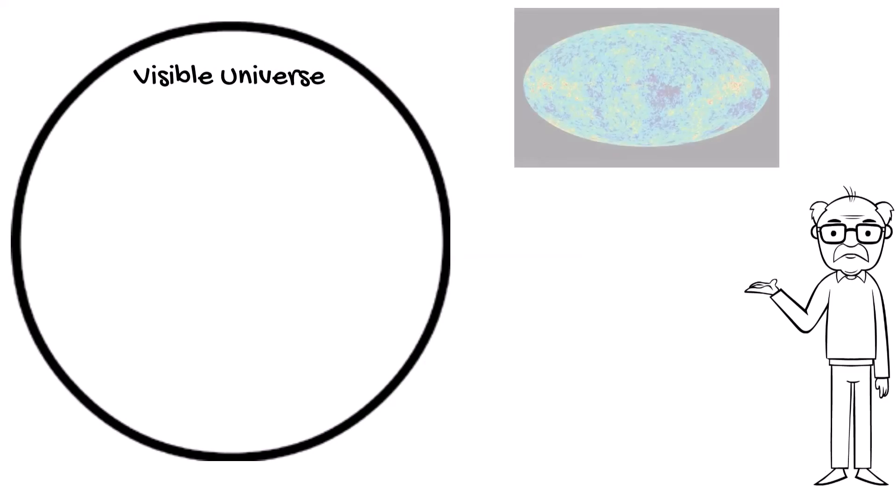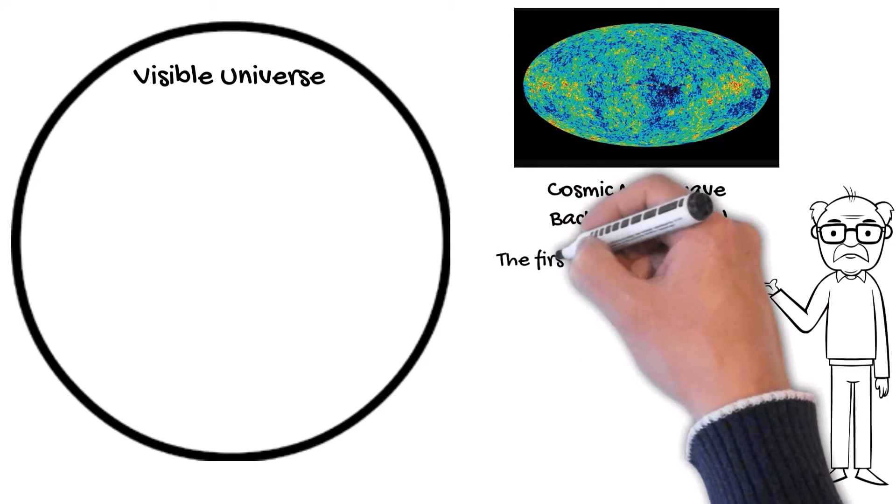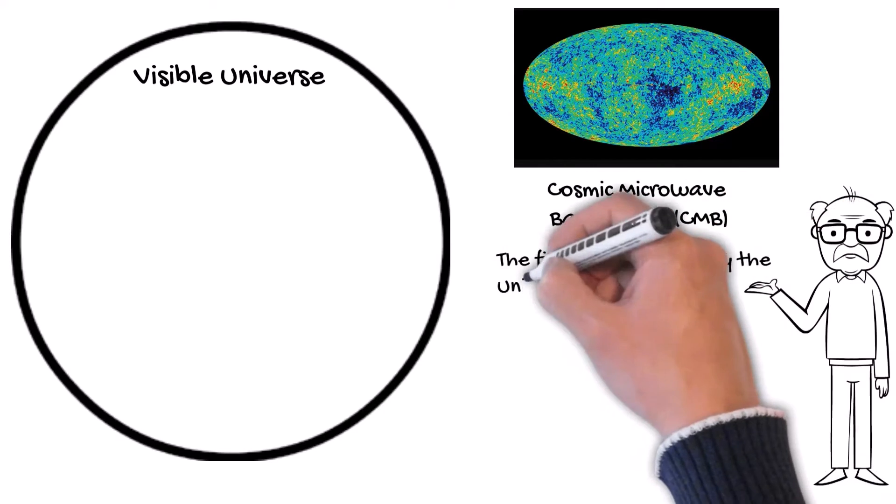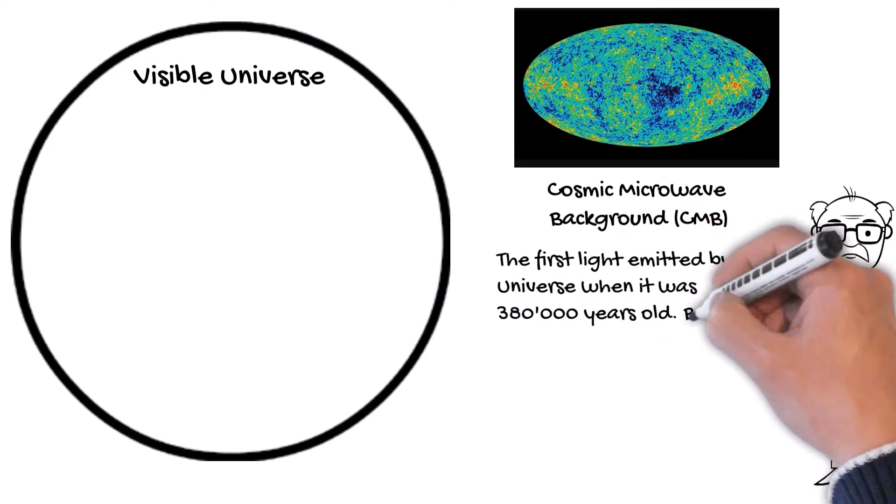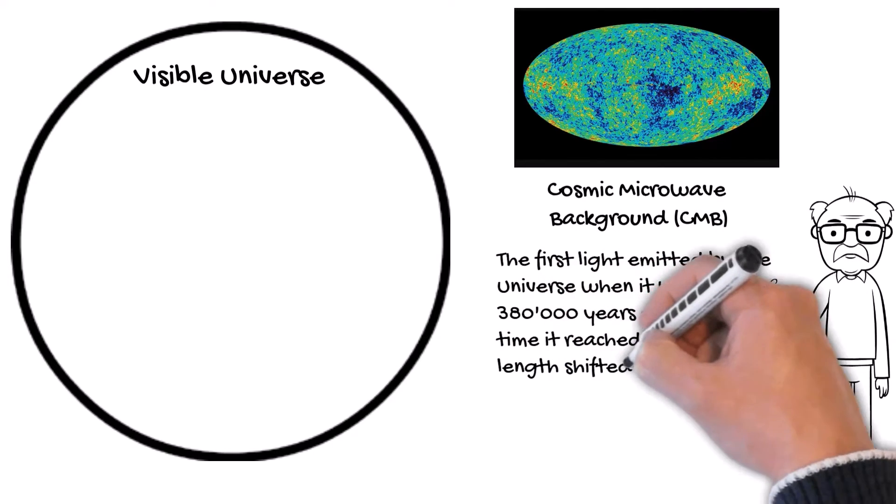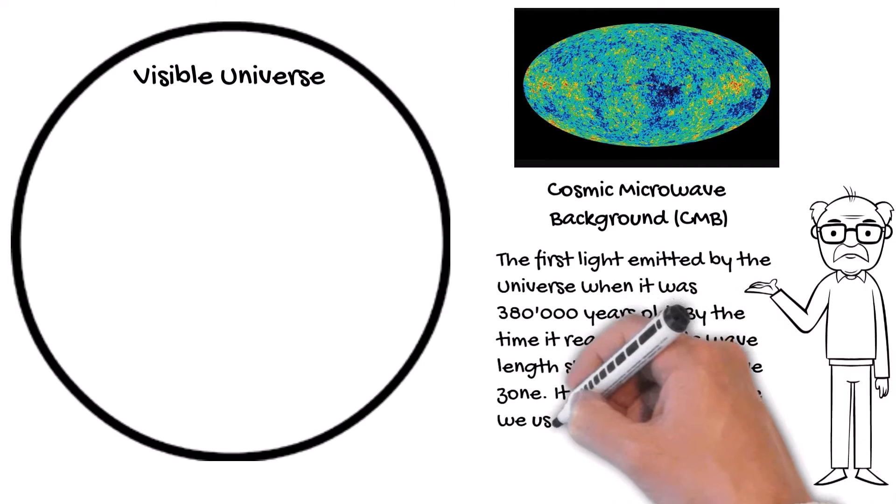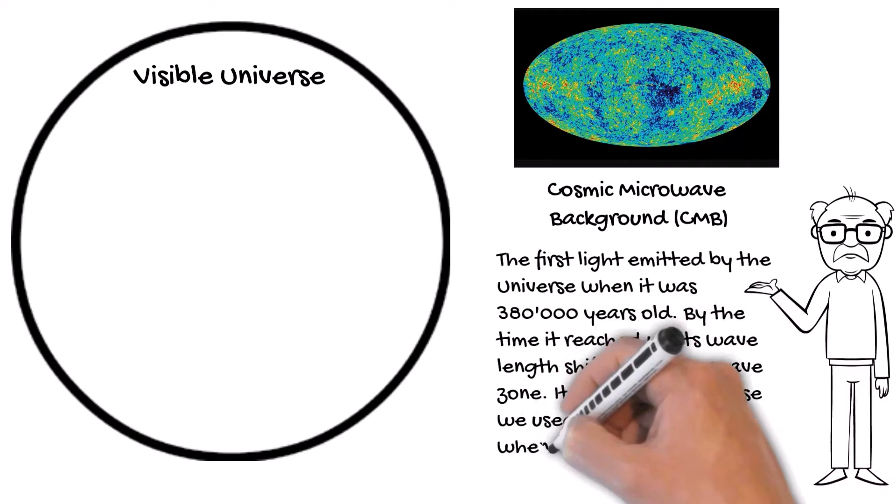The cosmic microwave background is the first light emitted by the universe when it was 380,000 years old. By the time it reached us, its wavelengths shifted to microwave zone. It is typically the noise we used to see on old TVs when there was no channel to view.